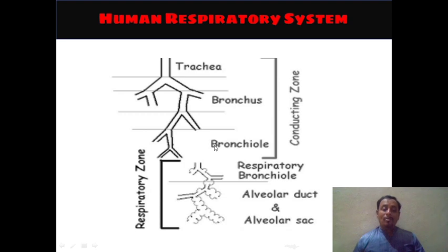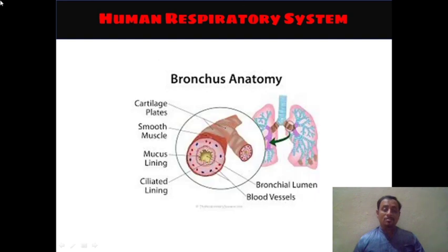This zone is known as the respiratory zone, where the gases are exchanged — gases that were conducted by the trachea, bronchus, and bronchiole. This diagram will be helpful for you; you can pause and learn from it. This is the main differentiation pattern of the lungs and the bronchial system inside the lungs. Let's see about the anatomy of the bronchus and how a bronchus forms.